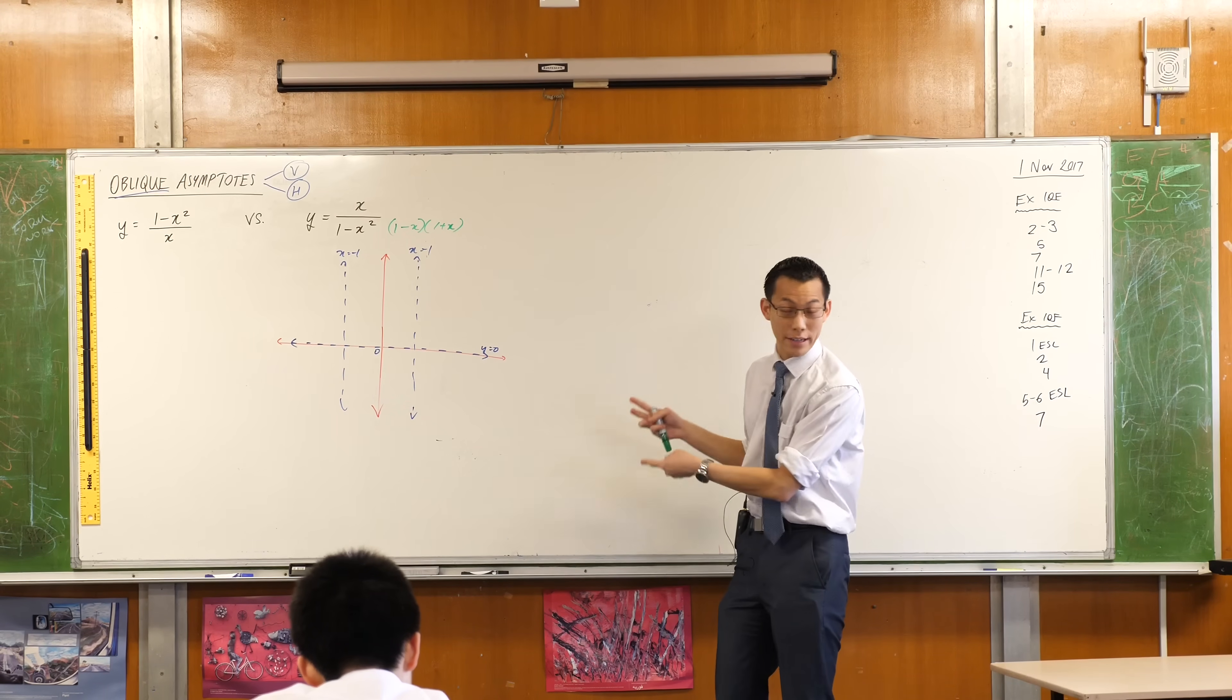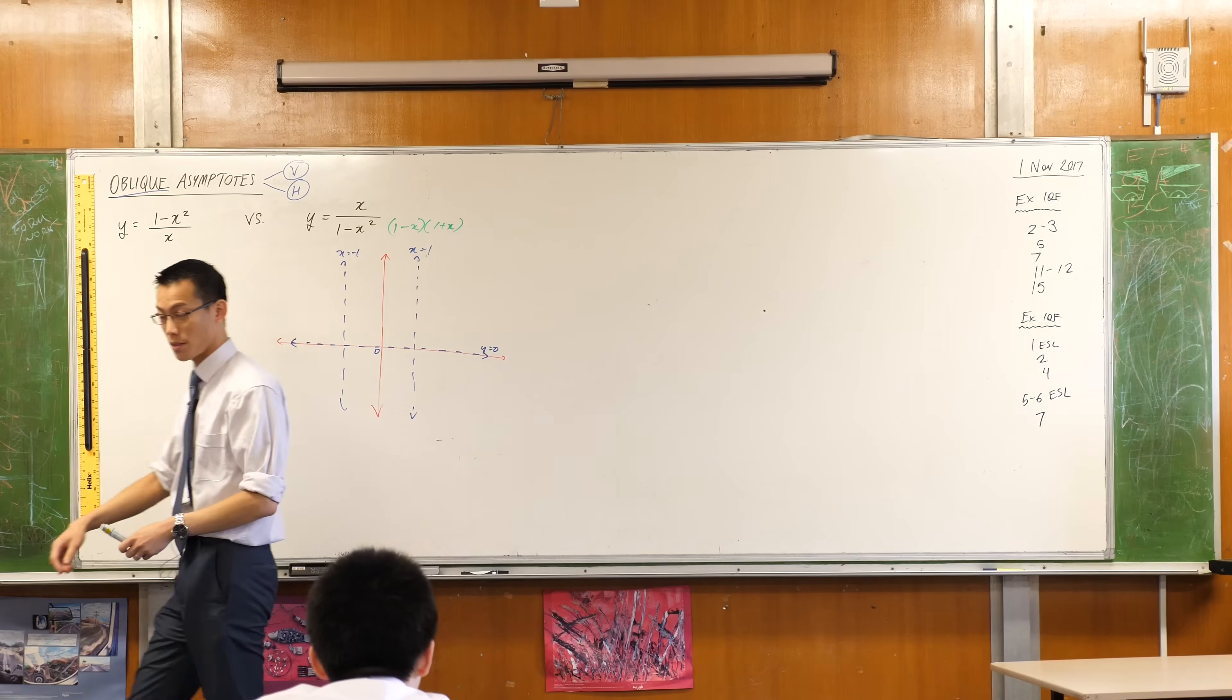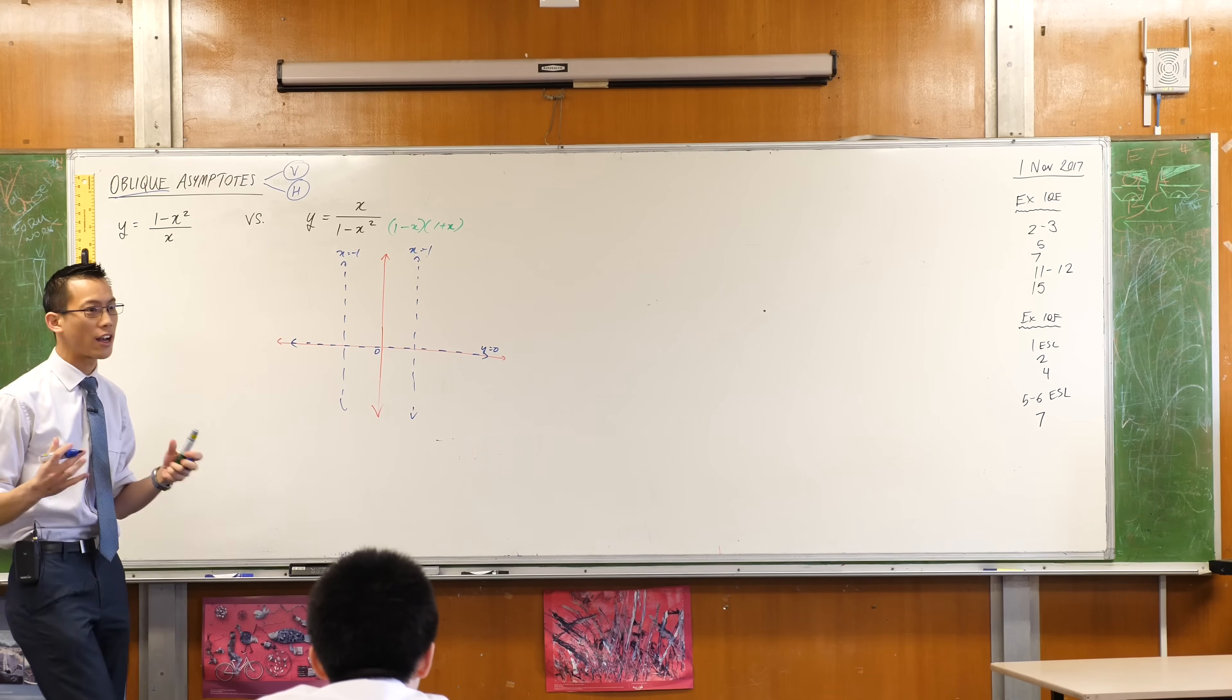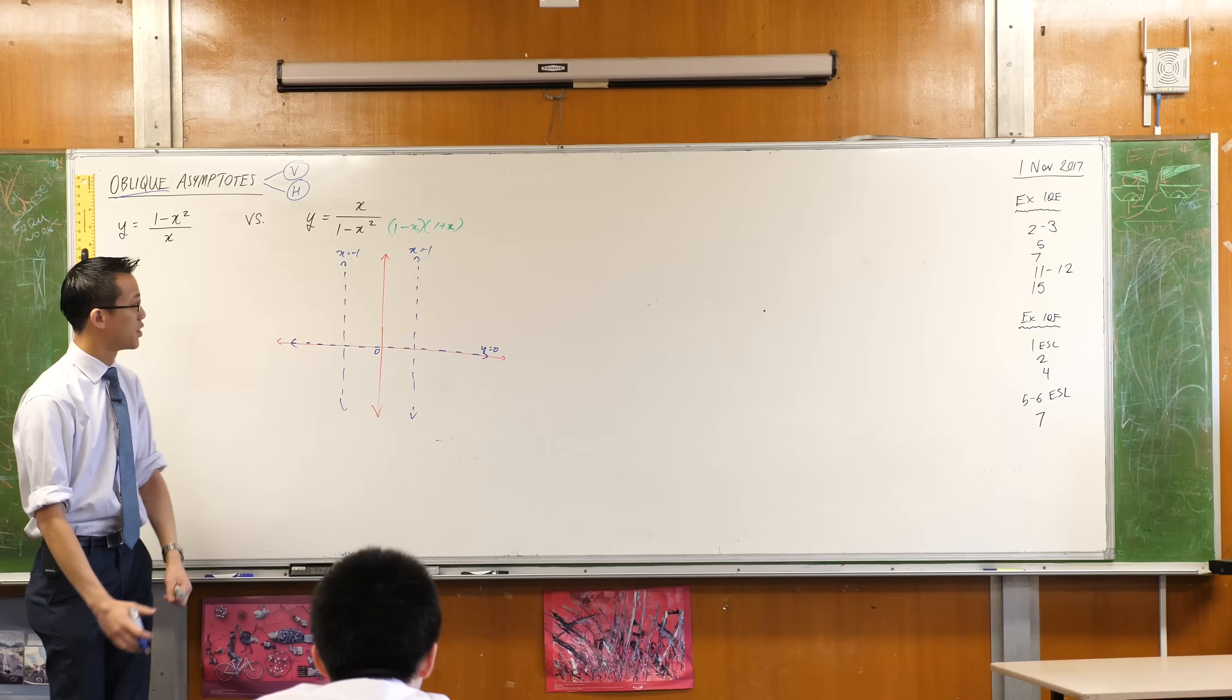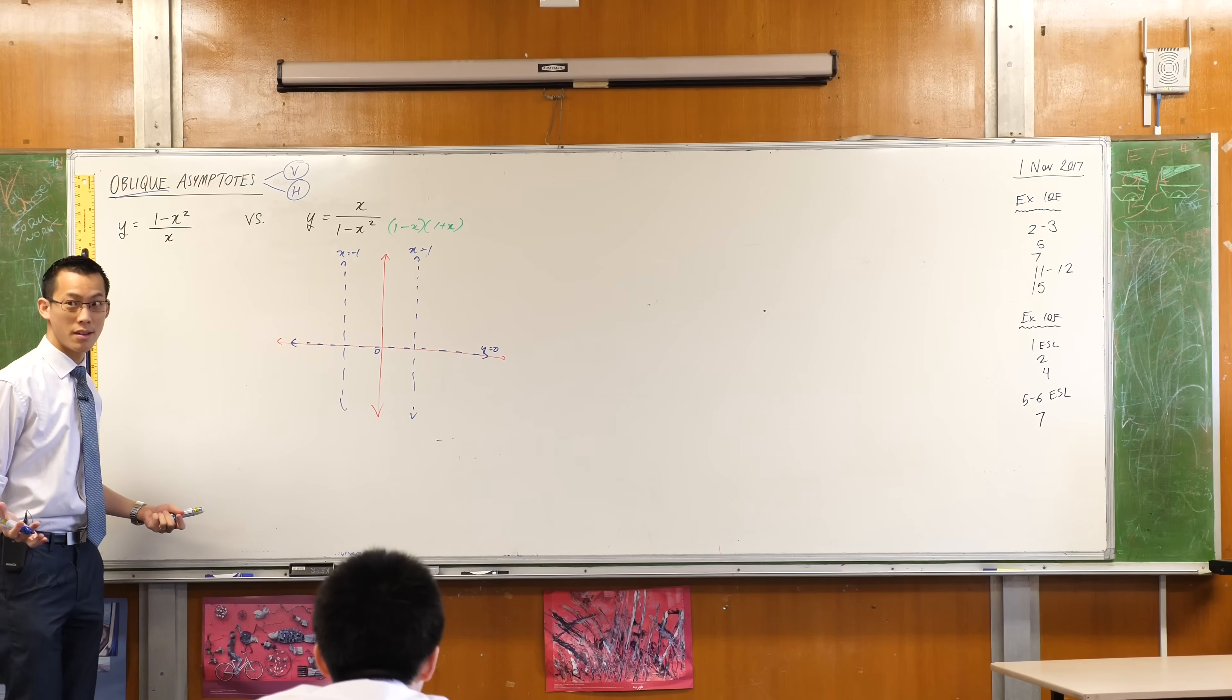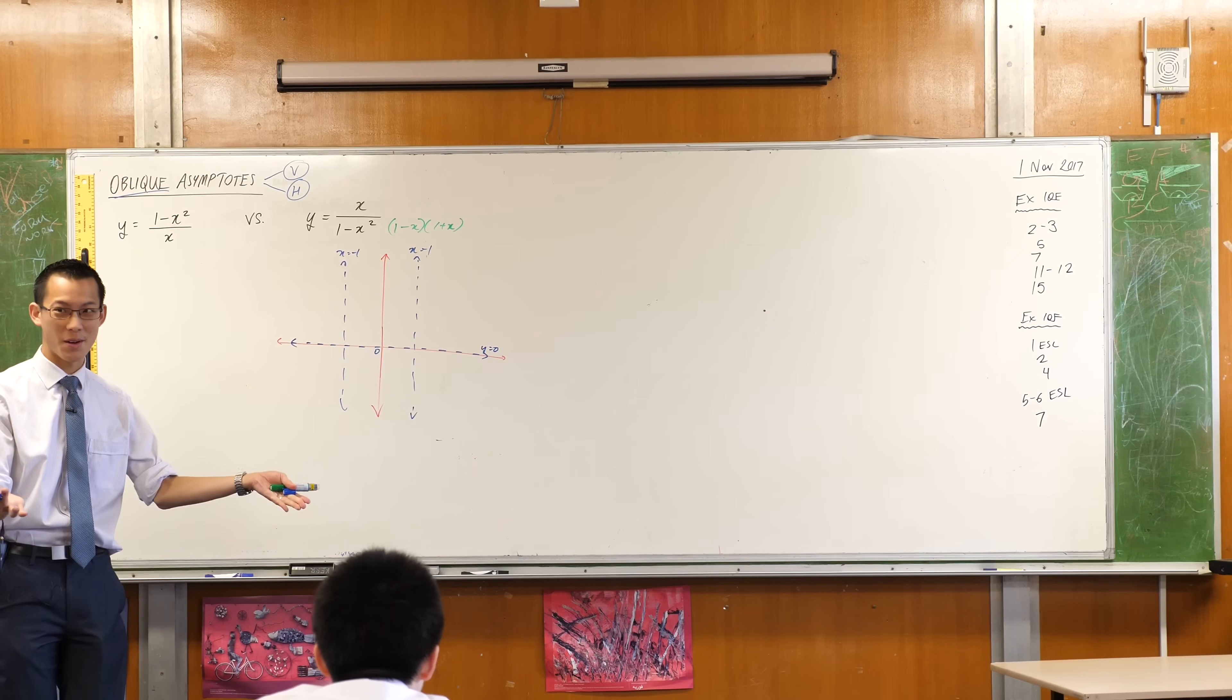And this will become important for us when we do one of our steps here. We've factorized, we've already got all the asymptotes. Is there an intercept? Are there any intercepts? This is going to pass through. Now you need to tell me more than zero because I haven't asked for a specific kind of intercept, all right? So are you telling me x equals zero, y equals zero, which one? Not a rhetorical question. Is it x equals zero or y equals zero?